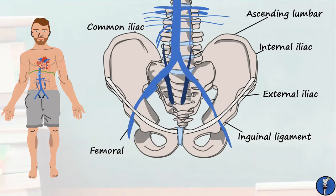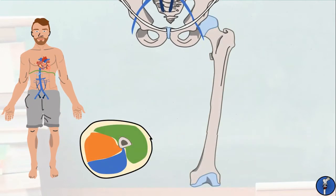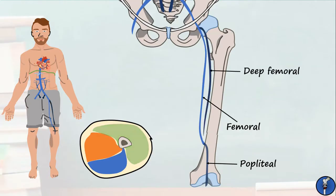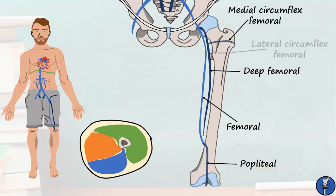The femoral vein actually begins behind the knee, at the level of the popliteal vein. It travels up the thigh with the femoral artery before joining the external iliac vein. Like the femoral artery, this vein mainly drains the anterior compartment of the thigh. Also draining into the femoral vein is the deep femoral or profunda femoris vein, which accompanies the deep femoral artery and takes blood mostly from the posterior compartment. Joining the deep femoral vein are the medial and lateral circumflex femoral veins, which drain the hip.